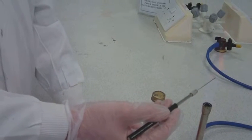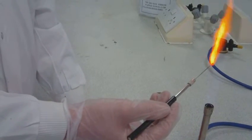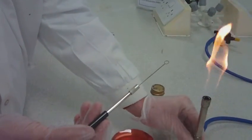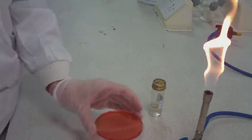Re-flame the loop to sterilize before putting away, turn Bunsen burner flame back to safety and then leave your agar plates on the side to be collected for incubation.